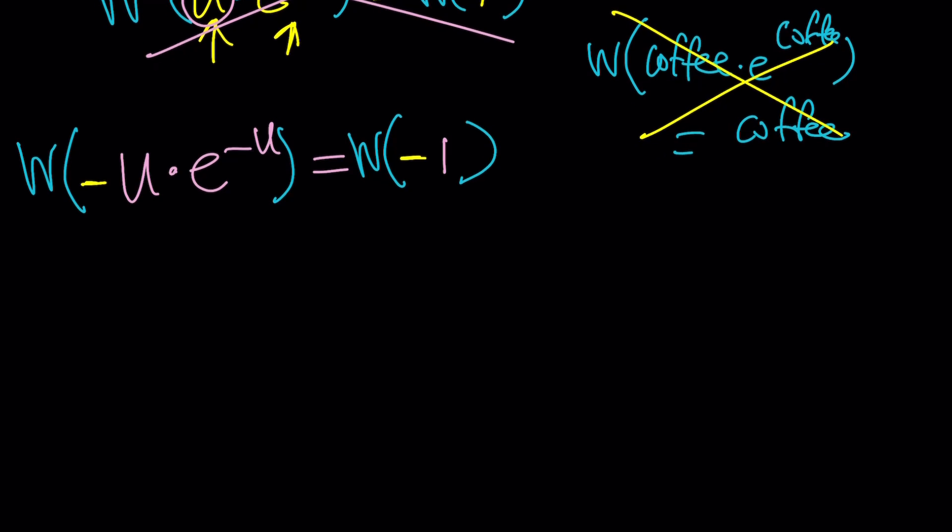Now, when you apply it here, you're going to get negative u. On the right-hand side, you're going to get W of negative 1. Million-dollar question. What is W of negative 1? I don't know, and I don't think it matters. It's like square root of 2. What is the square root of 2? 1.4 something? No. The square root of 2 is square root of 2. Nothing can be more exact than that. So let's leave it at that.